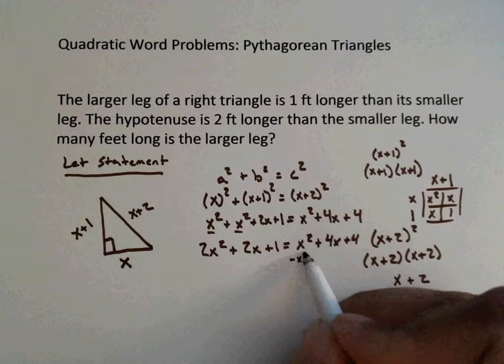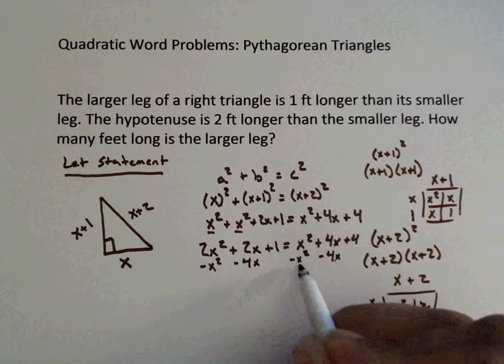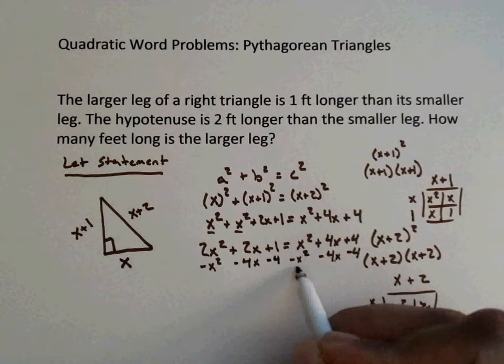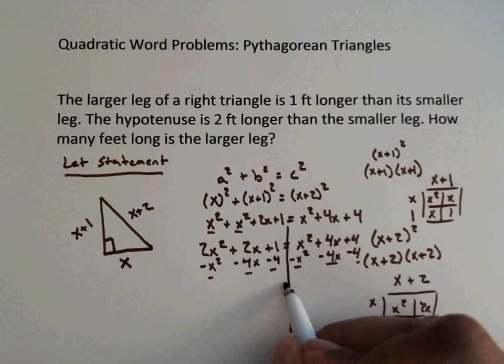I'm going to subtract X squared. There's X squared term here, so minus X squared. I'm going to go ahead and subtract 4X, so minus 4X. Remember what you do to one side, you do to the other. And we have minus 4, so minus 4. X squared minus X squared is 0, 4X minus 4X is 0, 4 minus 4 is 0.